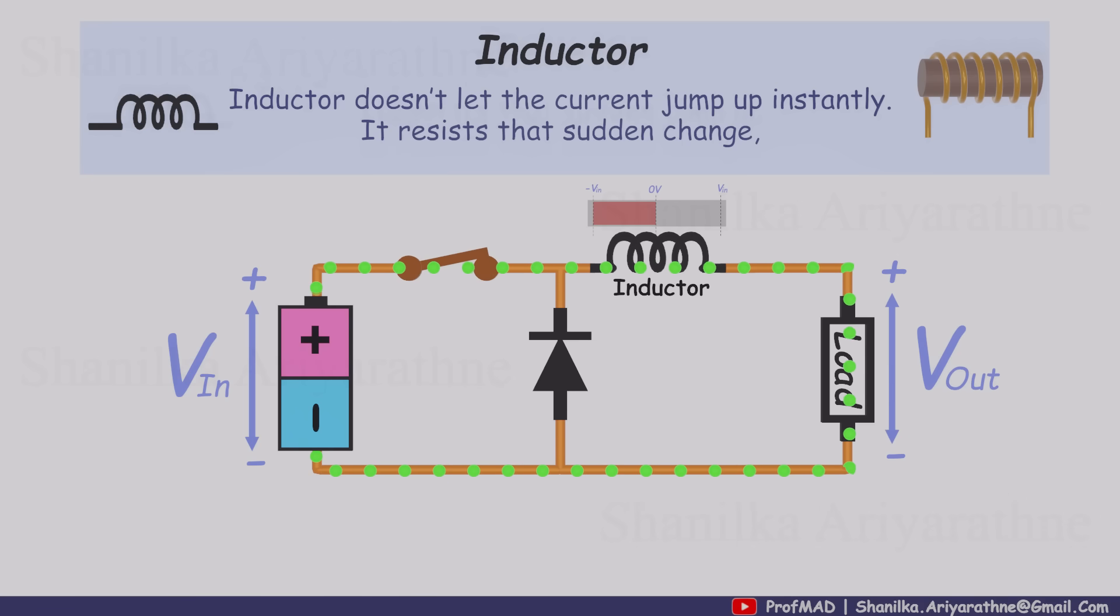When the switch turns on, the inductor doesn't allow the current to jump up instantly. It resists that sudden change, so at first the current is small and the voltage across the load is close to zero. During this time, the diode is reverse biased, so no current flows through it.